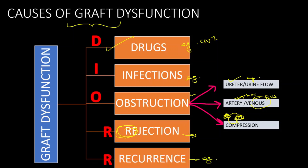Last is recurrence of the primary disease. These are the overall etiologies of graft dysfunction. Other differential diagnoses related to normal kidney dysfunction — like AKI related to volume depletion — should also be kept in mind. I have made a mnemonic using these alphabets, which helped me during my exams. Overall, you have to make a differential diagnosis, with points favoring and points against each. This is the overall summary slide.